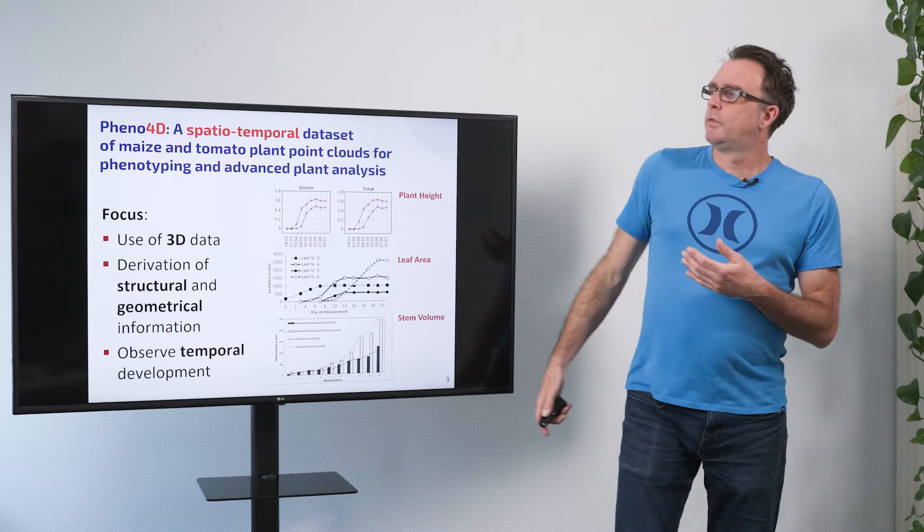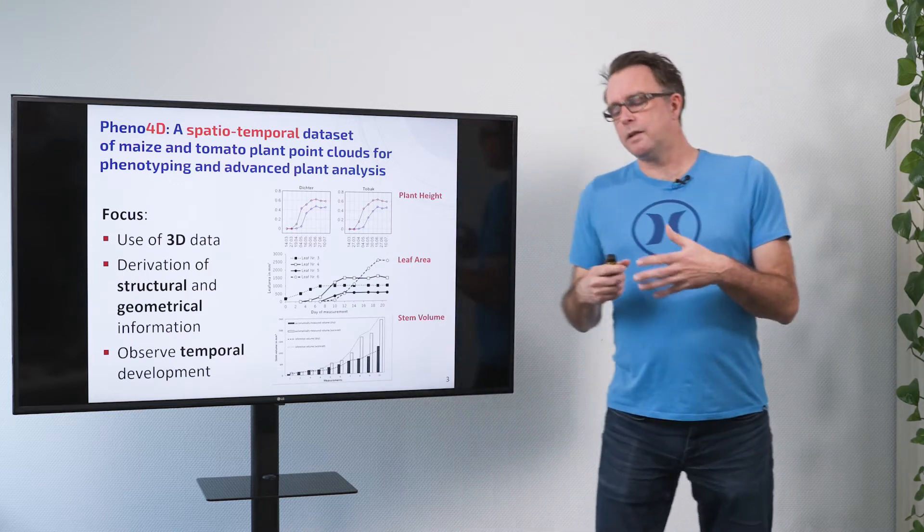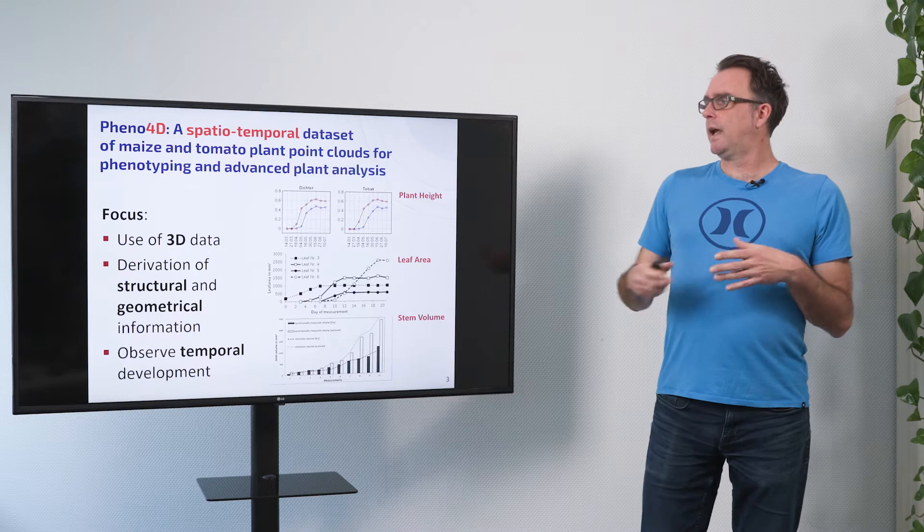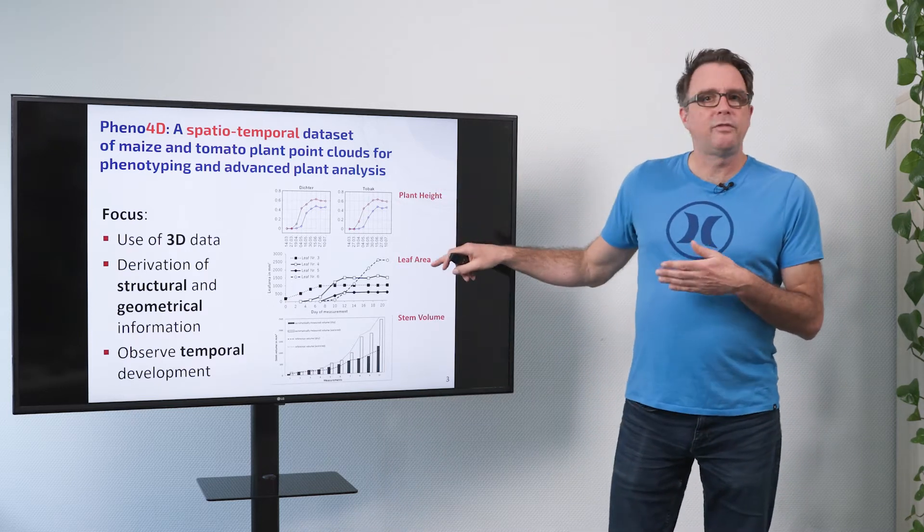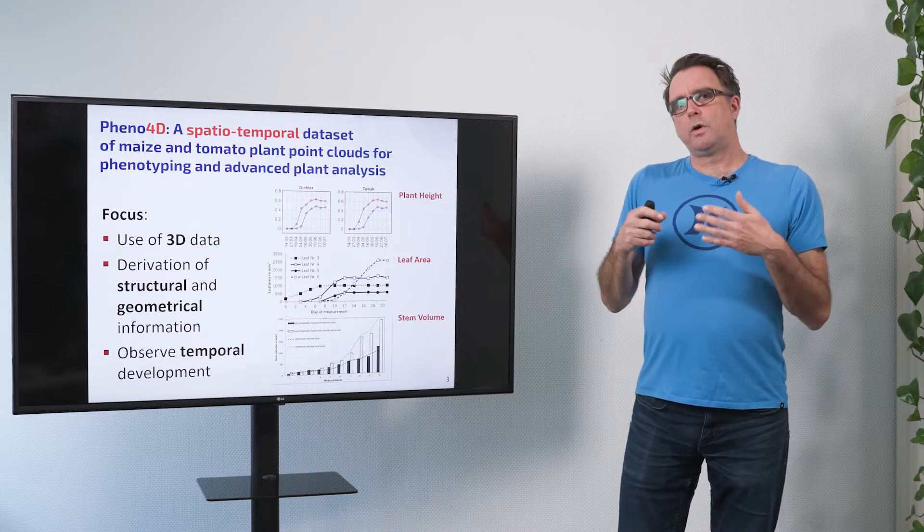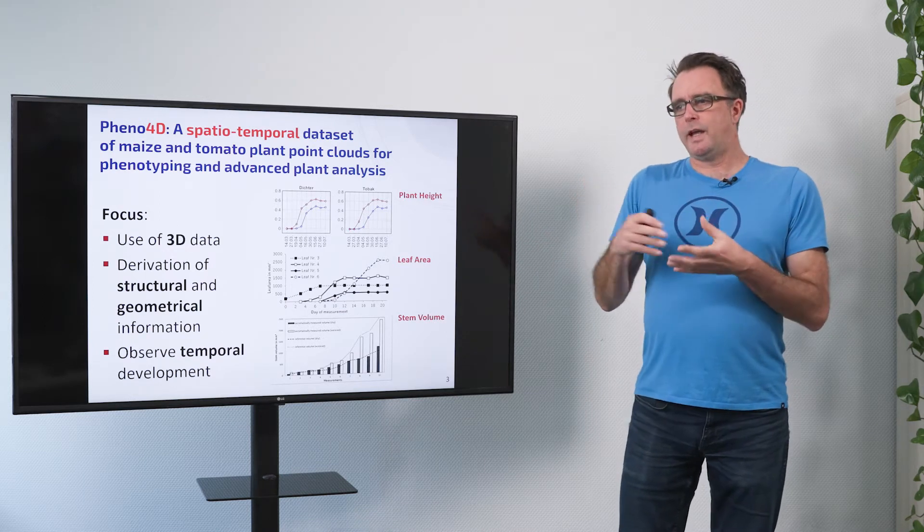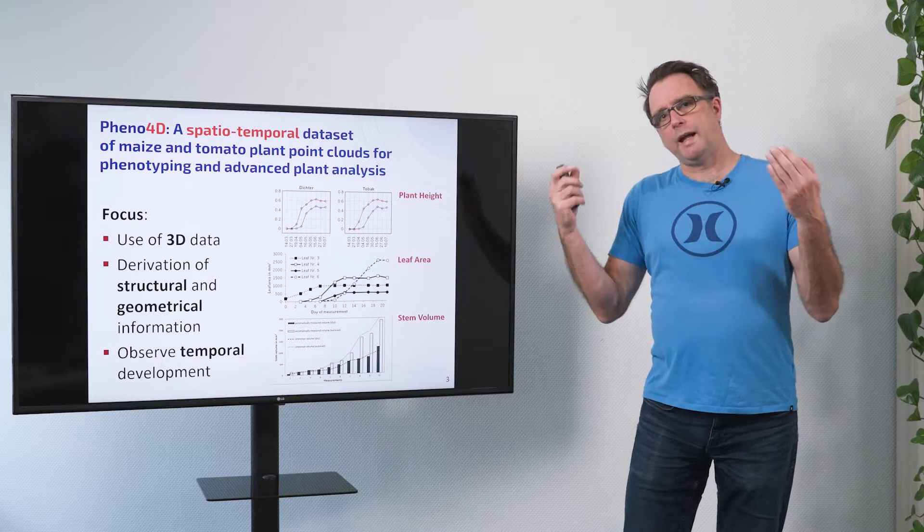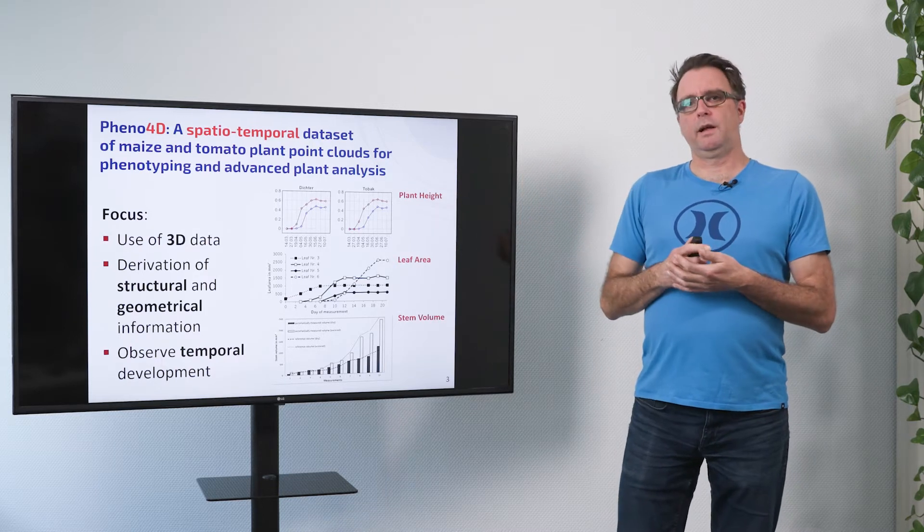In our work we focus on 3D data so we focus on geometrical traits like the height or leaf area or the stem volume for example and we focus on the observation over time so we want to get growth rates and growth curves and things like that.